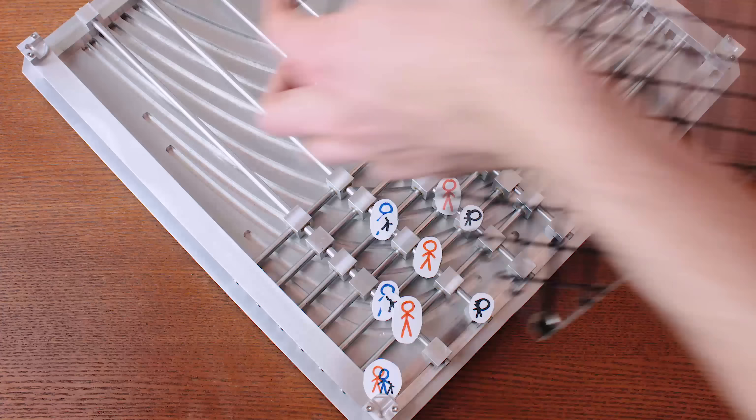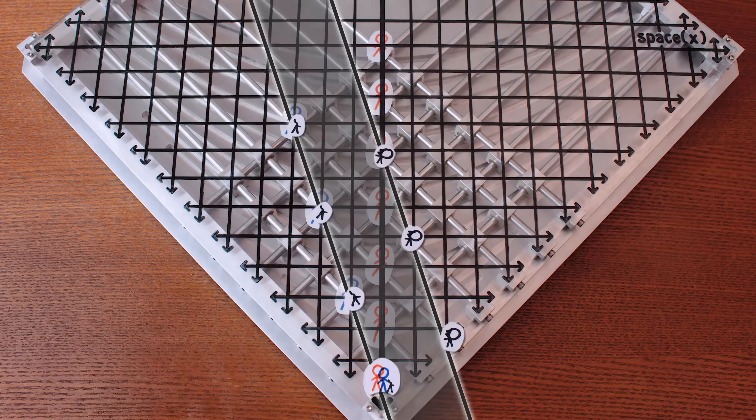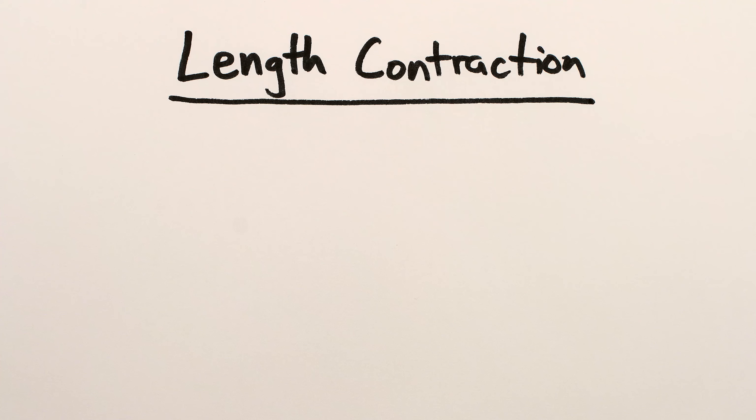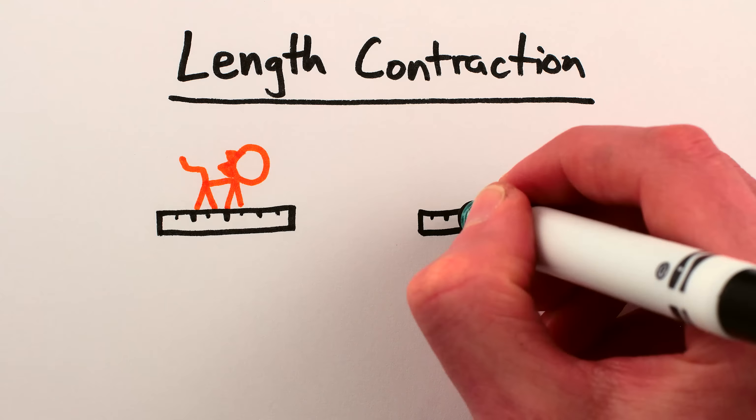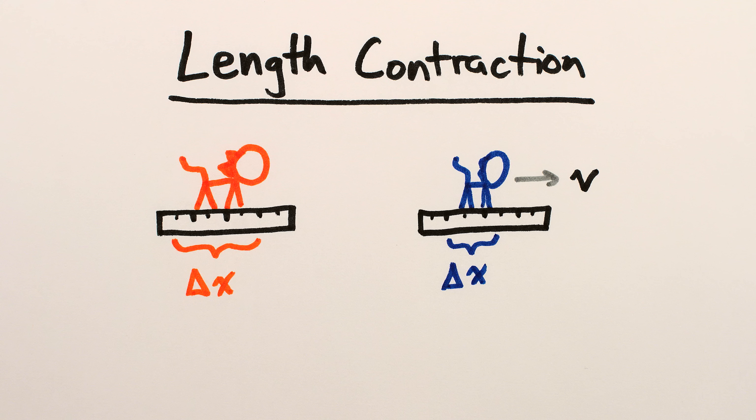The same thing happens the other way too. If you have a cat that's stationary in your perspective, then when I view it from my perspective, I'll measure its length by measuring the head and tail at the same time according to me as being shorter. This is the phenomenon we call length contraction. The measured lengths of moving things are shorter than when those things are viewed as not moving.